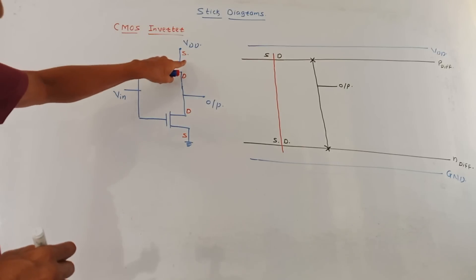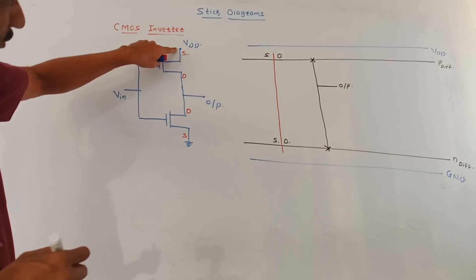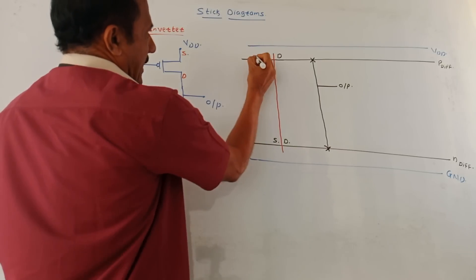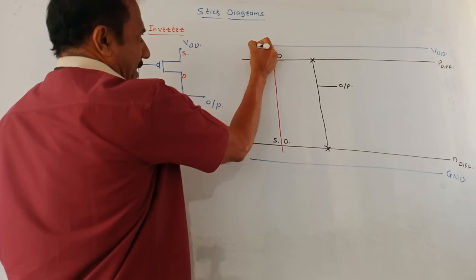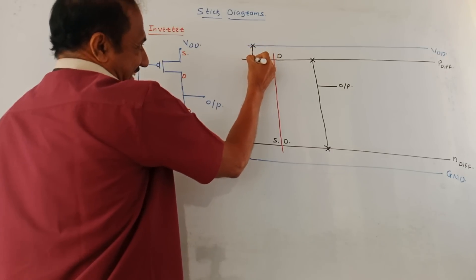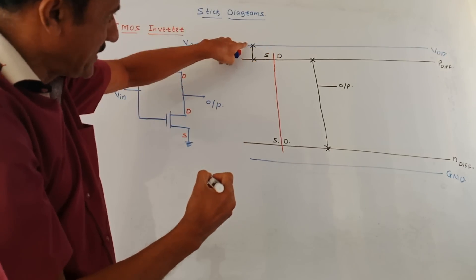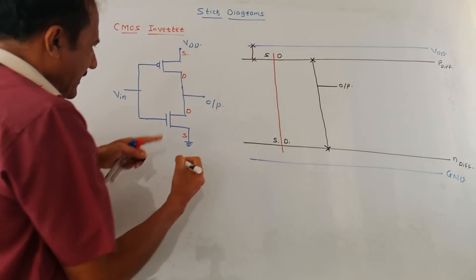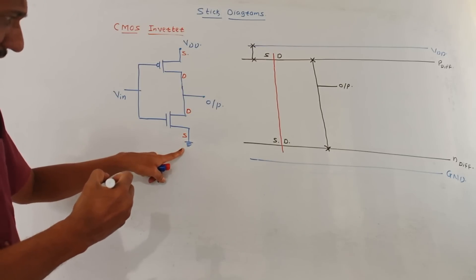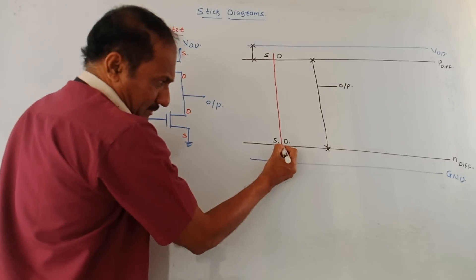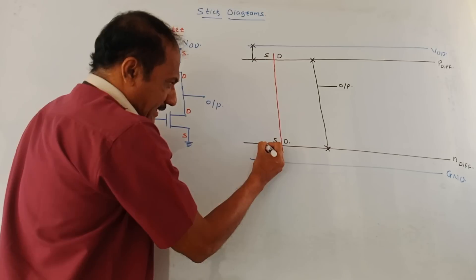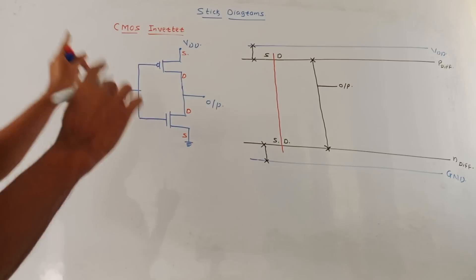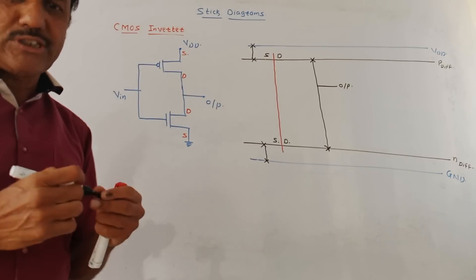For the remaining connections: the source of PMOS is connected to VDD — mark a cross and connect it to the VDD line. The source of NMOS is connected to ground — mark a cross and connect it to the ground line. This completes the STICK Diagram of the CMOS inverter.